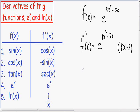I always like to write my x's and my constants before the e. So the derivative is just going to be 8x minus 3, all multiplied by e to the 4x squared minus 3x.